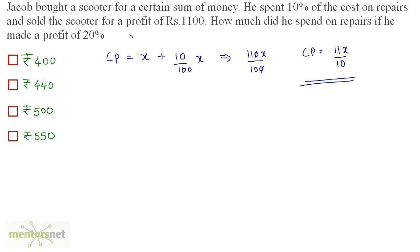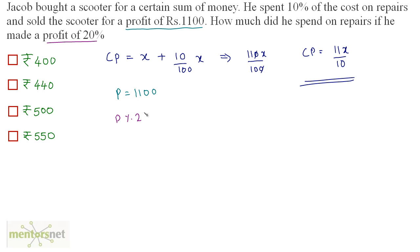Some more data is given in this question: the profit is 1100 rupees, so P equals 1100. We also know the profit percentage, so profit percentage equals 20%.